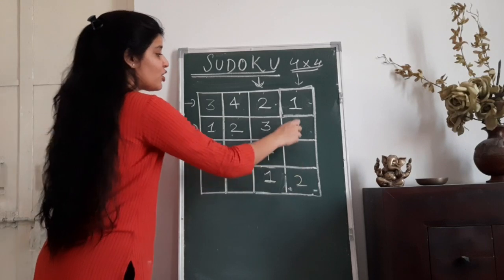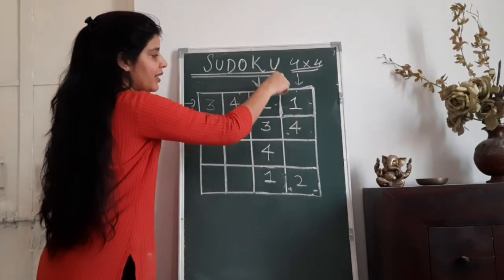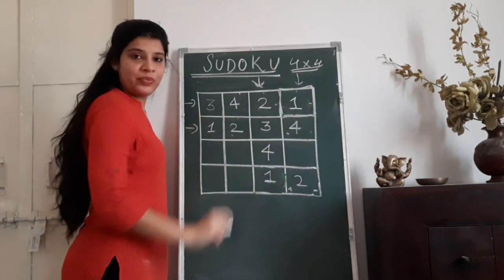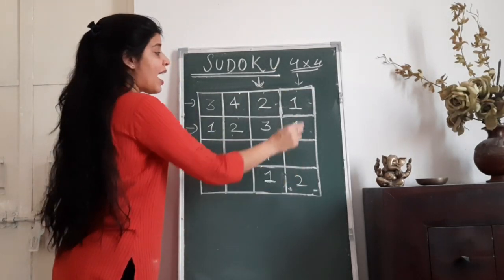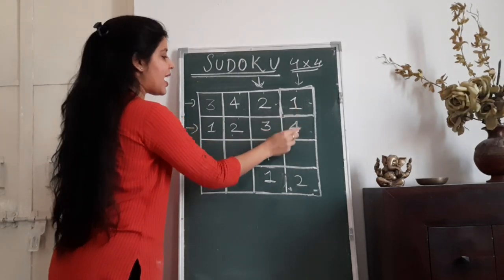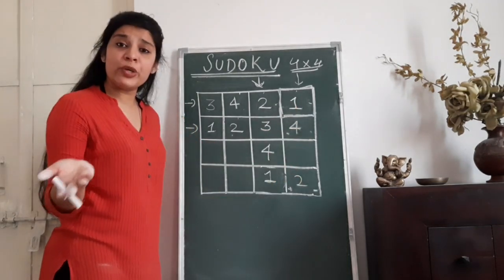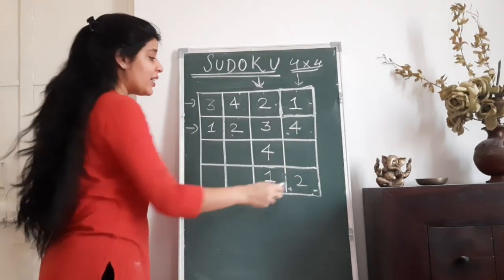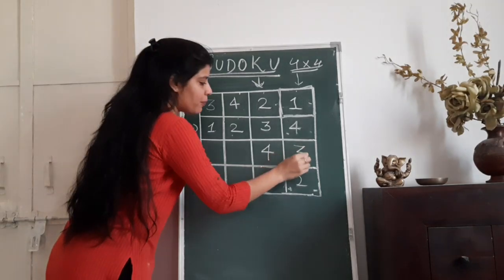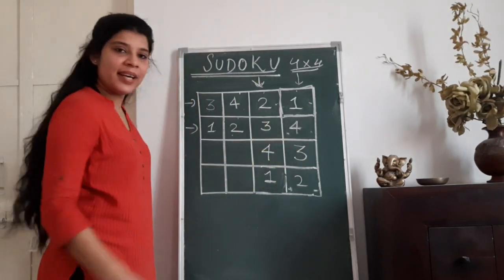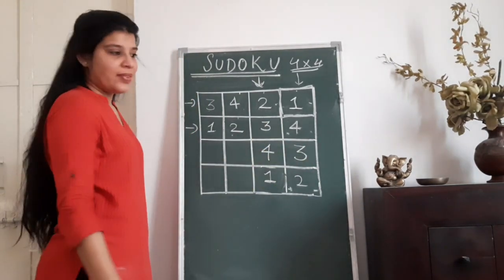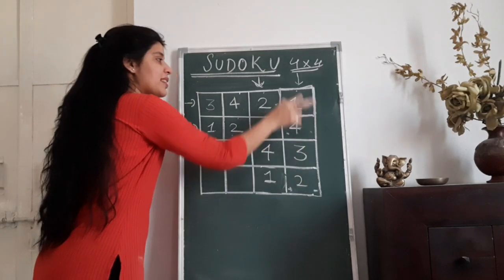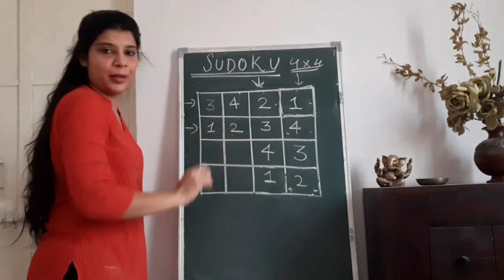Now let's look at the last column. I have 1, I have 4, I have 2. What I do not have? I do not have 3. So I can put 3 here — that was the only number missing in the fourth column.